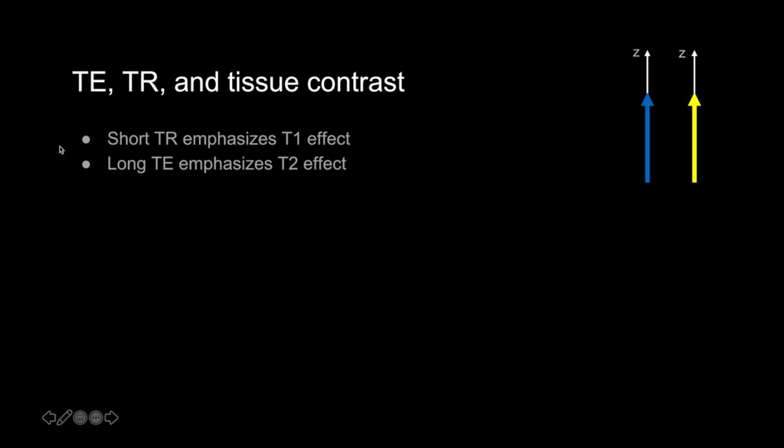Why do short TRs emphasize T1 effect? When we repeat pulse sequences with a short TR, we do it so quickly that we don't let the magnetization completely recover into the z-axis before starting the next sequence. Different tissues have big differences in T1 signals, and that determines tissue contrast.